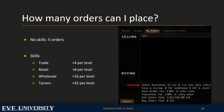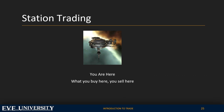The number of orders you can have open depends on your character's skills. Trade gives four orders per level, Retail gives eight orders per level, Wholesale 16 orders per level, and Tycoon 32. Since Wholesale costs 35 million ISK and Tycoon 100 million, you can benefit from setting up orders through an alt character or making alpha characters. When you place a buy order, the value of the item is removed from your wallet into escrow.